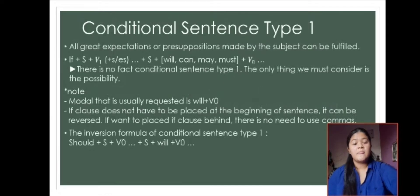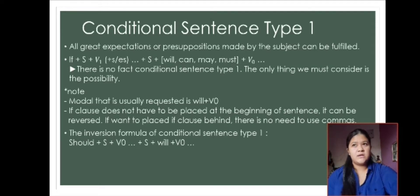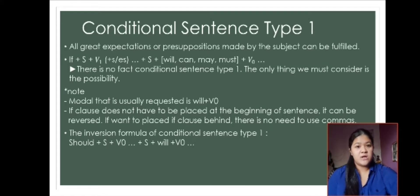Let's talk more specifically about conditional sentence type 1. Conditional sentence type 1 is a great expectation or proposition that the subject can fulfill — in other words, what the subject has or will do will happen. The formula is: if + subject + verb 1 (which may be verb + s) + subject + verb 1.